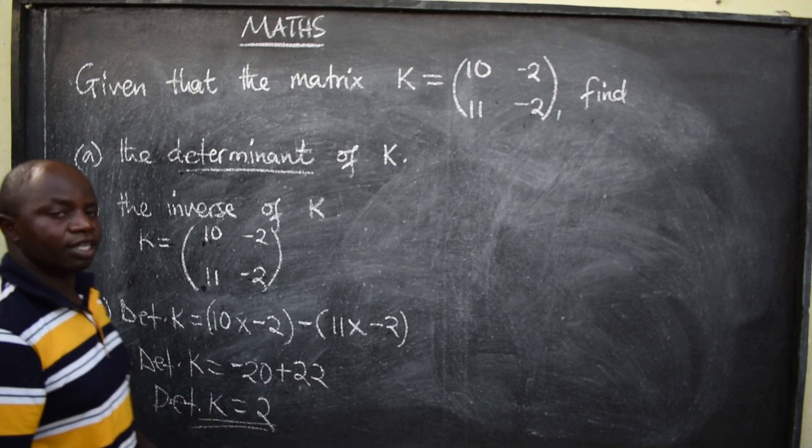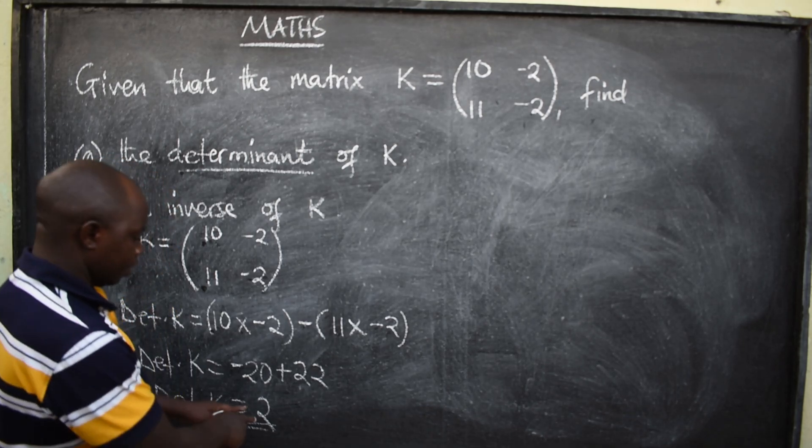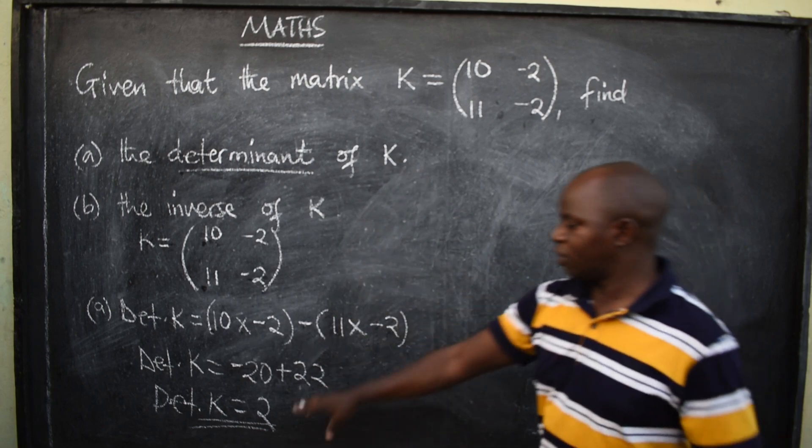So, K is equal to, or determinant of K, of matrix K, is 2. So, the determinant of this matrix is 2.